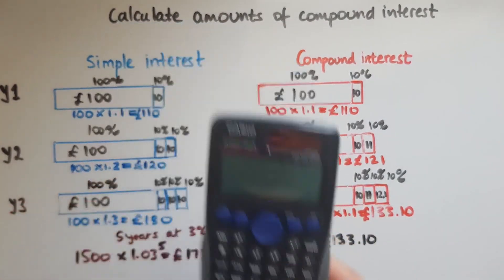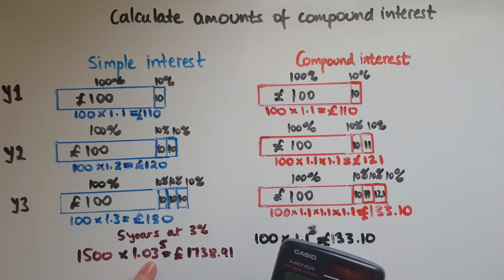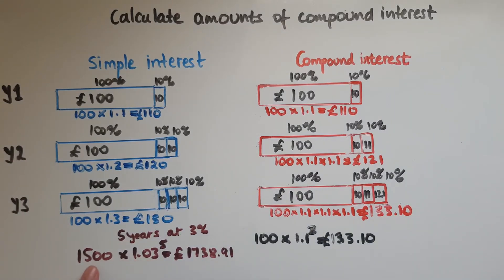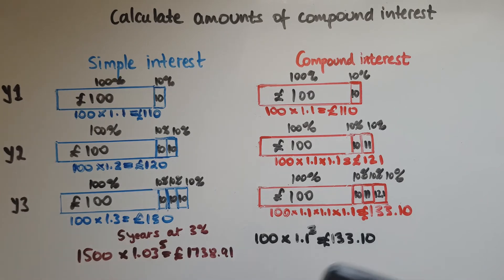Be careful not to use zero point zero three instead of one point zero three, because that will dramatically reduce the initial amount rather than increase it — it gives you only the three percent rather than three percent on top of the full hundred.